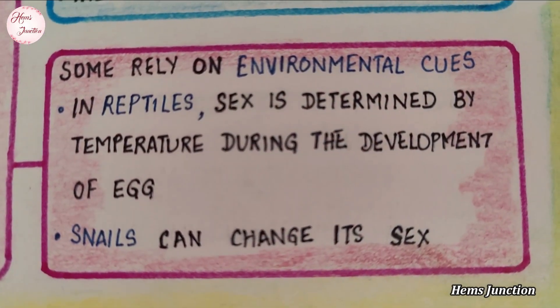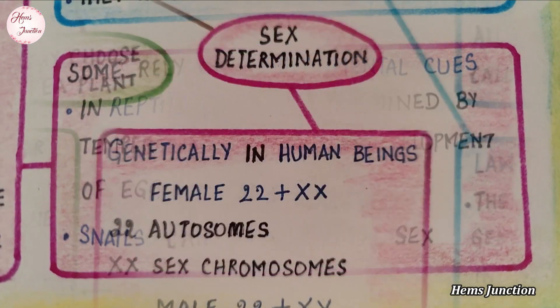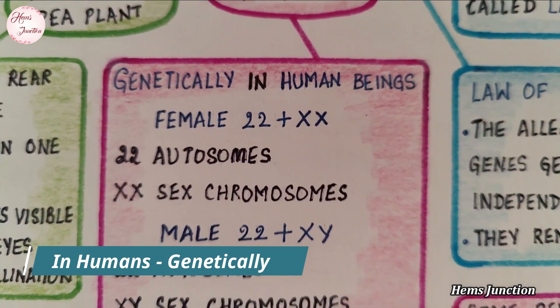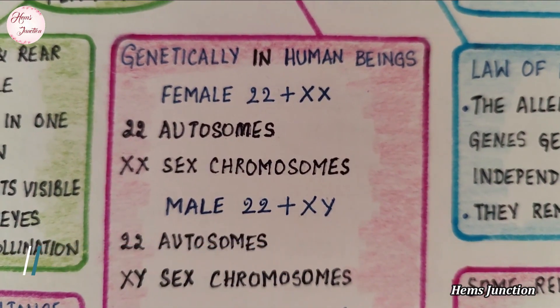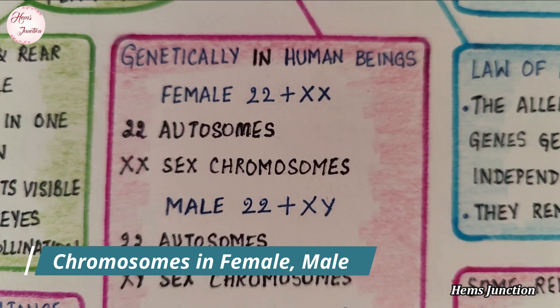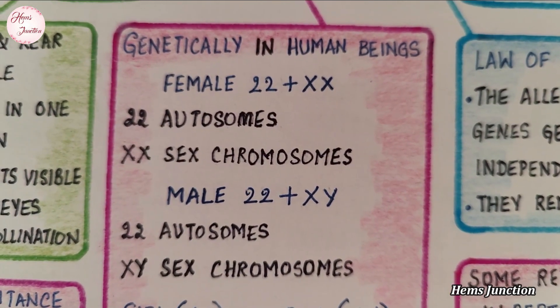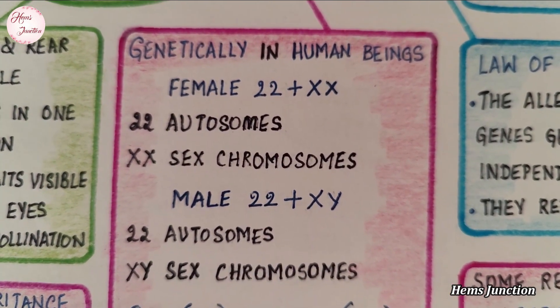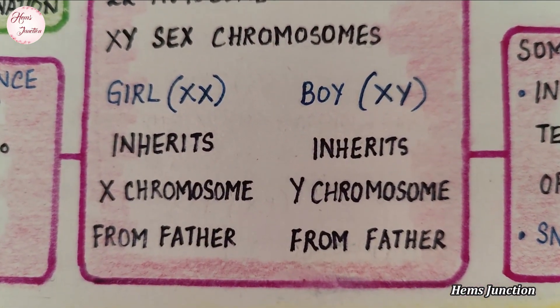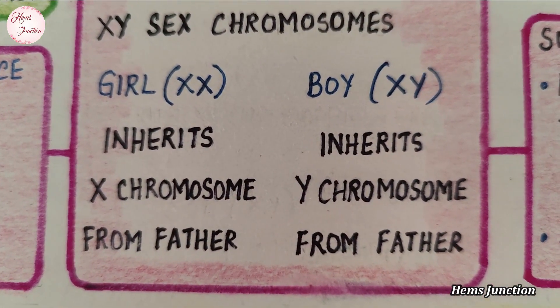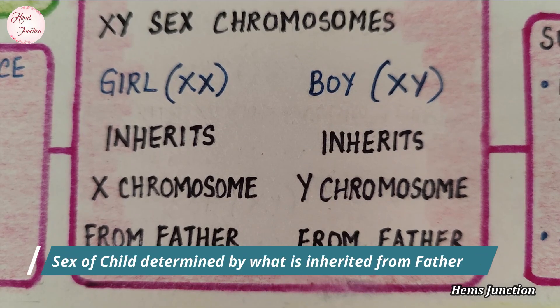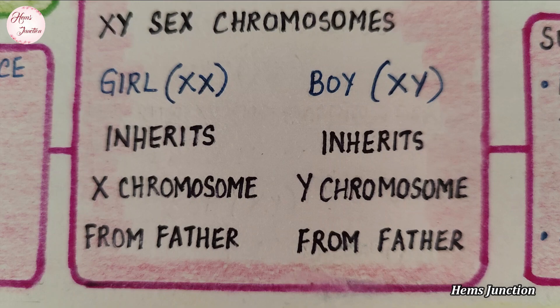In humans, sex of an individual is genetically determined. Humans have 23 pairs of chromosomes. Out of these, 22 pairs are autosomes and only one pair is the sex chromosome. Females have XX and males have XY sex chromosomes. All children inherit the X chromosome from their mother. The sex of the child is determined by the chromosome inherited from their father. A child who inherits the X chromosome from their father will be a girl, and who inherits the Y chromosome will be a boy.